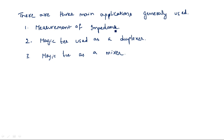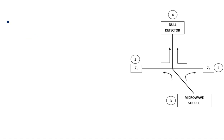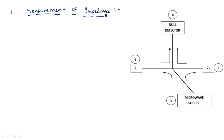The first case is measurement of impedance. Let us see how the unknown impedance can be measured using the known impedance. Magic T has been used in the form of a bridge, as shown in this figure. It can be used in the form of a bridge where the impedance can be measured. We know that magic T has four ports.